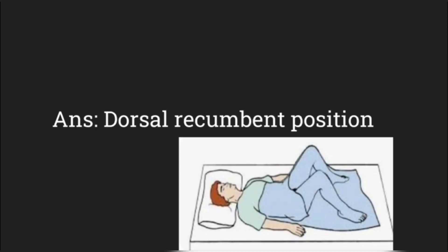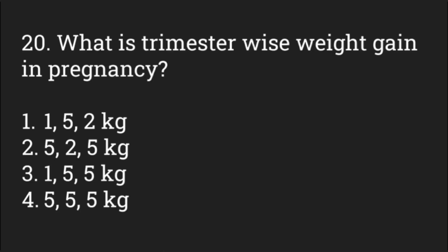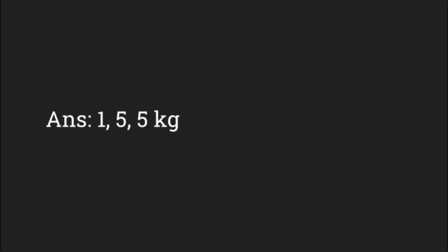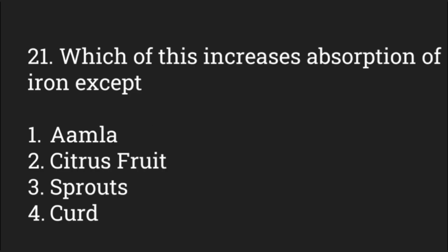What is the trimester-wise weight gain in pregnancy? Options: 1 kg / 5 kg / 2 kg; 5 kg / 2 kg / 5 kg; 1 kg / 5 kg / 5 kg; 5 kg / 5 kg / 5 kg. The answer is 1 kg / 5 kg / 5 kg, with a total of 11 kg.